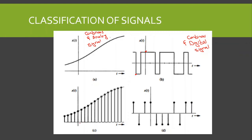For signal C, the time is defined for discrete values, so this is a discrete time signal — unlike signals A and B where the time was continuous. Looking at the amplitude axis, the amplitude can take any value, a very large number of values. Therefore, this is a discrete and analog signal.